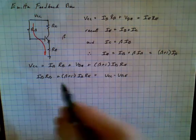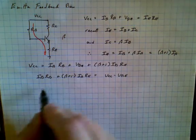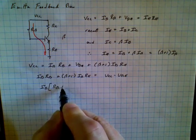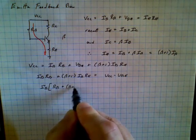Now we can pull the Ib term out of here. So we have Ib times Rb plus beta plus 1